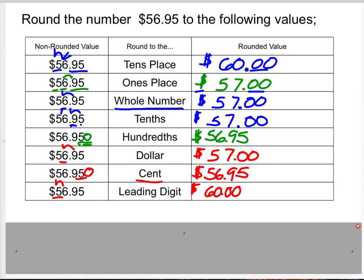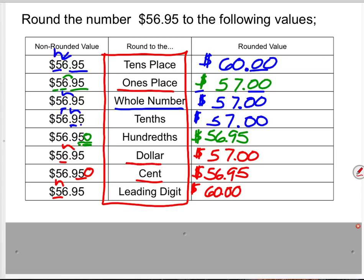Hopefully that gives you an idea of the many different ways we might be asked to round something. Some are very similar, such as rounding to the ones place and rounding to the dollar, or rounding to the hundredths place and rounding to the cent. It really just depends on how somebody is saying it or asking it of you.